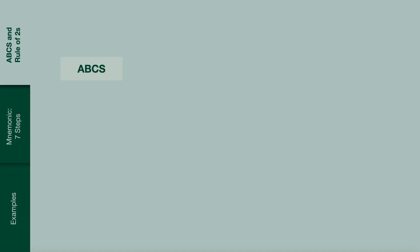The ABCS approach is simple and memorable. A refers to adequacy, B to bone, C to cartilage, and S to soft tissue.